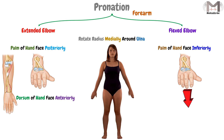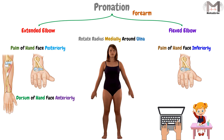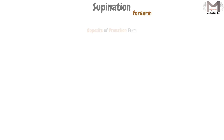An example of this movement is when we place our palm on a table, so we will pronate the forearm and the hand. Another example is when we are typing on a computer keyboard, so we also make the forearm pronated. This is the meaning of pronation.